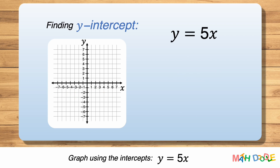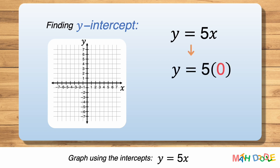Now, let's find the y-intercept. The y-intercept of a line is the point where the line crosses the y-axis, and it has the form of (0, B). So, to find the y-intercept of the line, we are going to substitute 0 for x and solve the equation for y. 5 times 0 is 0, and the equation becomes y equals 0. So, when x is 0, y is 0. This tells us that the line has a y-intercept of (0, 0), where the line crosses the y-axis.